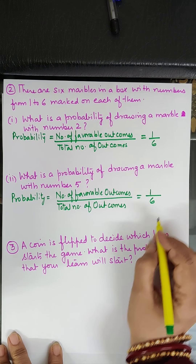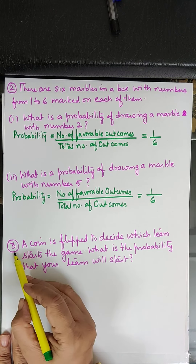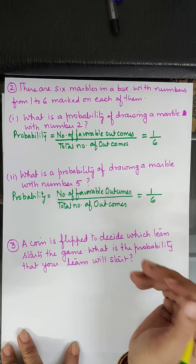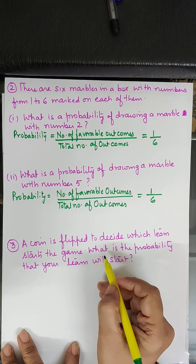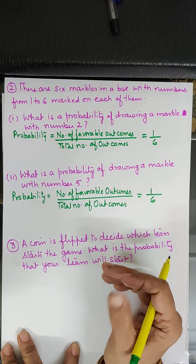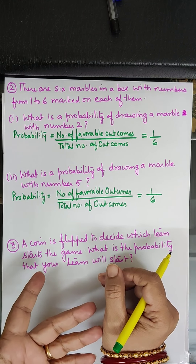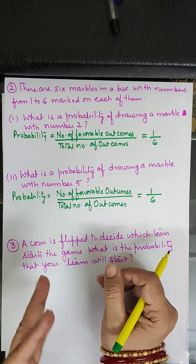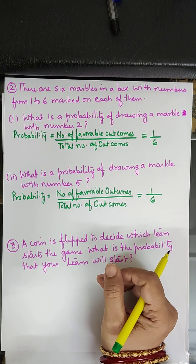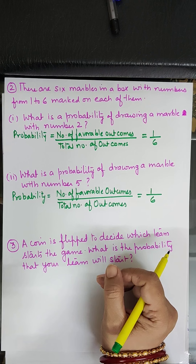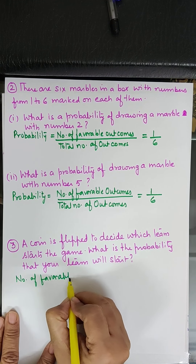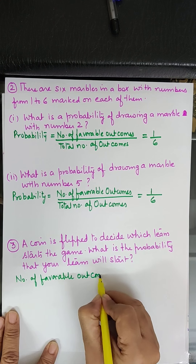In today's class, let us start with Exercise 3.4 on the topic Data Handling. In the very first question, we have to tell whether the following statements are certain to happen, impossible, or can happen but not certain.